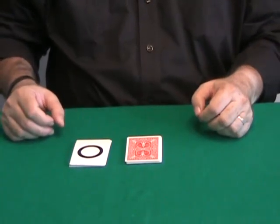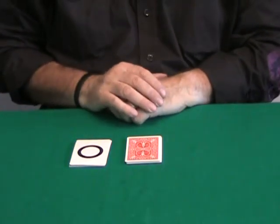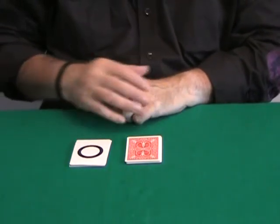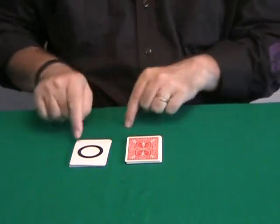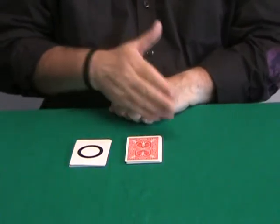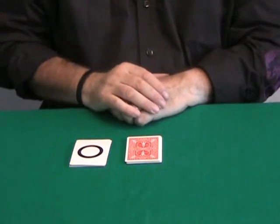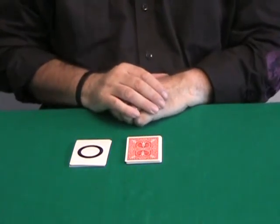And then you ask them to recite the word ESP - in other words, three letters or three cards - and to take away from the top of each packet, alternating, one card for each letter.